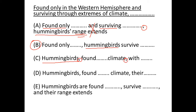In option C, it says 'hummingbirds' followed by two commas — a subject-comma-comma-verb construction — meaning we should have a verb after the second comma, but the verb is missing. Eliminate C. Similarly in D, we have 'hummingbirds' as the subject followed by two commas, and again a verb is missing. Eliminate D.